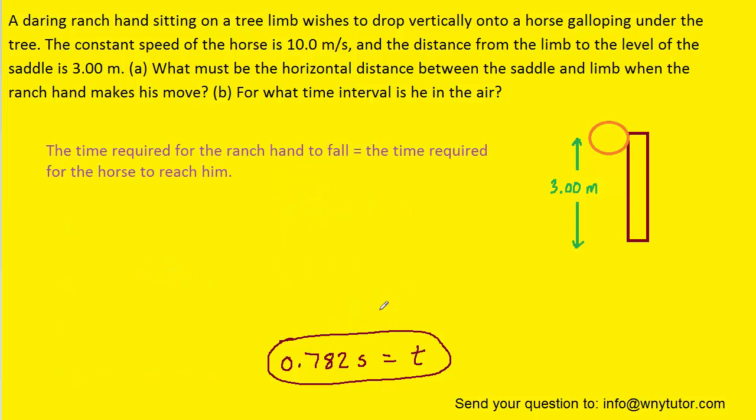The time required for the ranch hand to fall will equal the time required for the horse to reach the ranch hand. If you'd like to you can pause the video and read that to yourself a couple of times and make sure that it makes sense. But basically what we're saying is that if the time for the ranch hand to fall is given by 0.782 seconds, then it's also going to take 0.782 seconds for the horse to reach the ranch hand right at the moment that the ranch hand is reaching ground level. Or at least saddle level in this case.